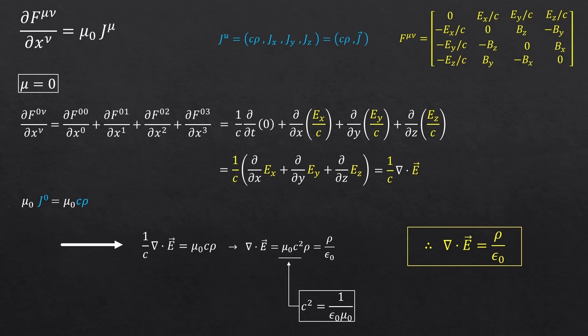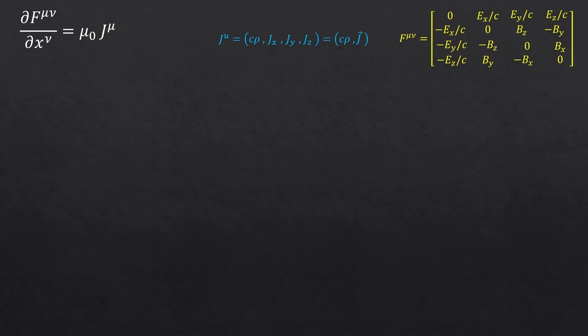Therefore, we finally obtain this nice-looking expression. And doesn't it look familiar? This is, in fact, the first Maxwell's equation, the Gauss's law, right? So, this equation, with mu equals to 0, gives us the first Maxwell's equation. This is getting interesting, no?